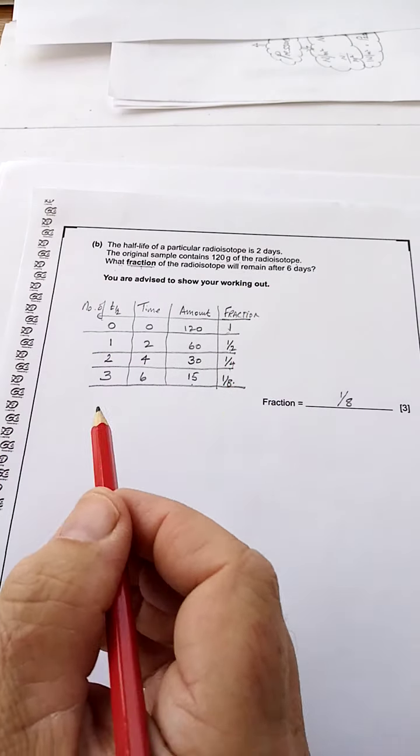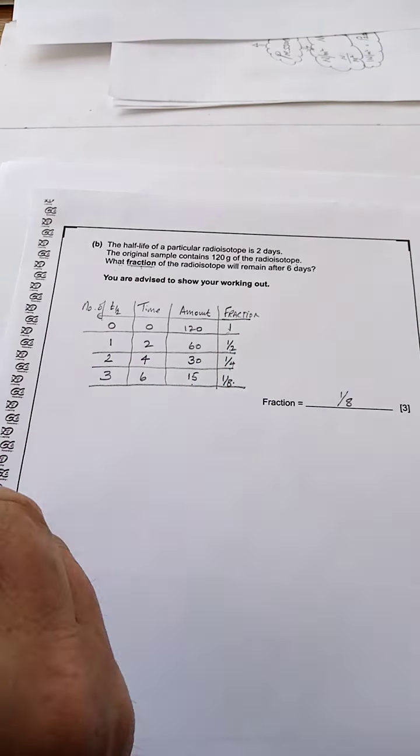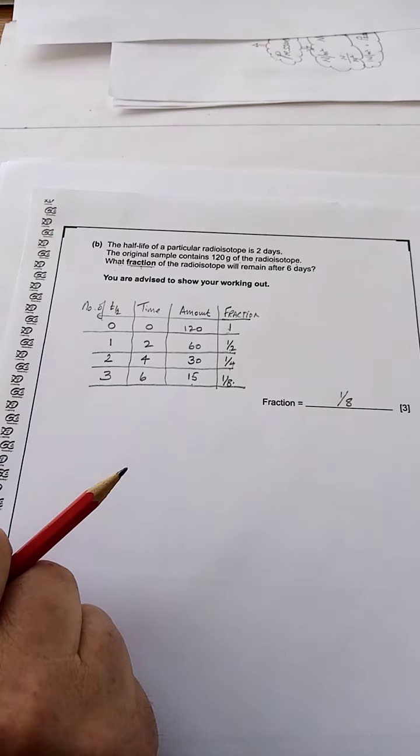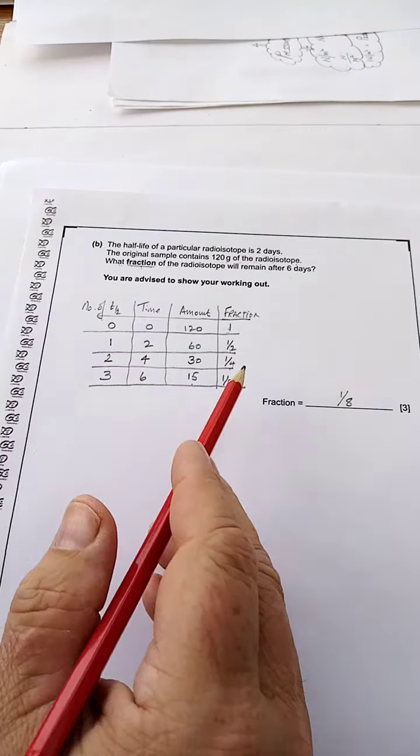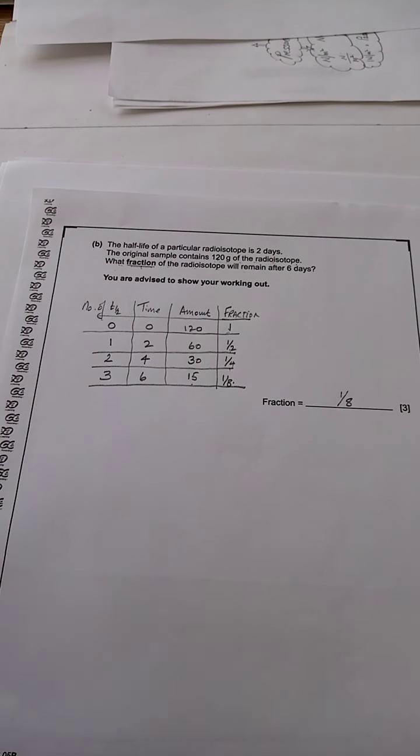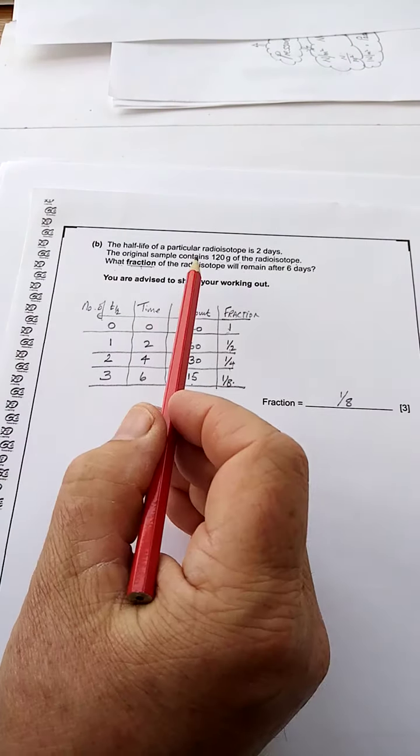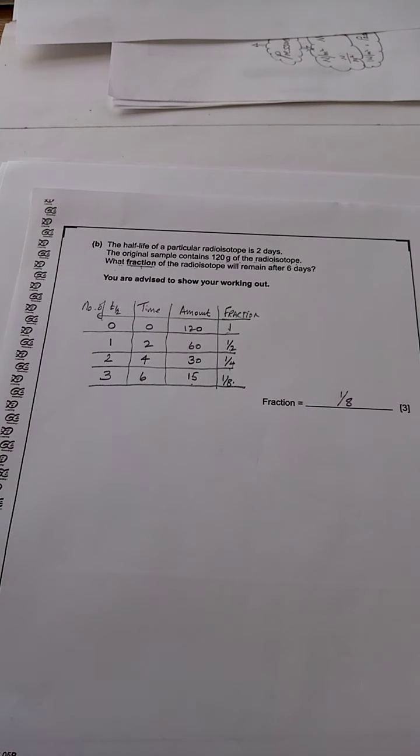There's one-eighth left that is radioactive, and there are seven-eighths that are still there but have changed. The nuclei have changed, they do not disappear. So that's question 2B done. These wee tables are very, very handy to do this sort of solution. See you in the next question.